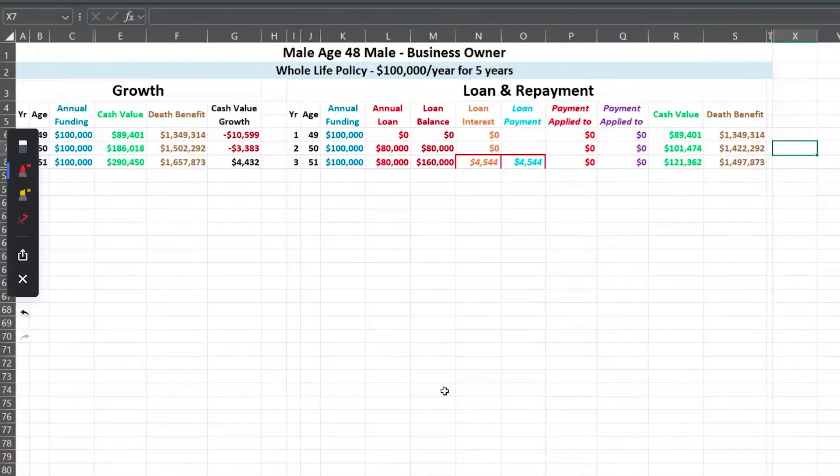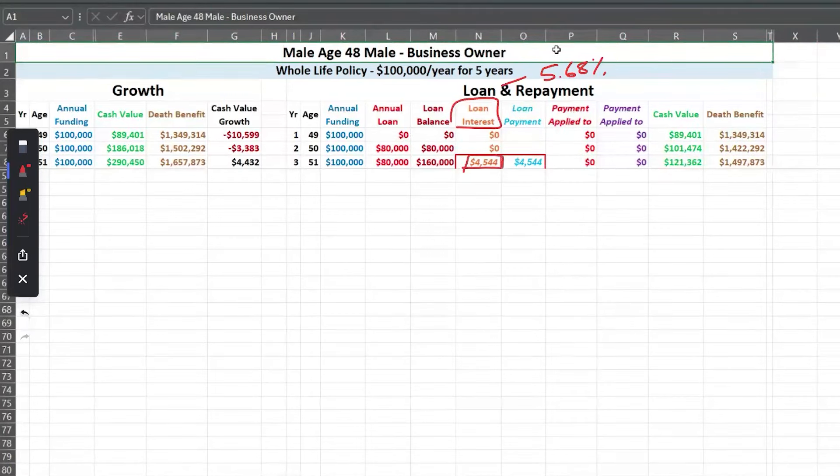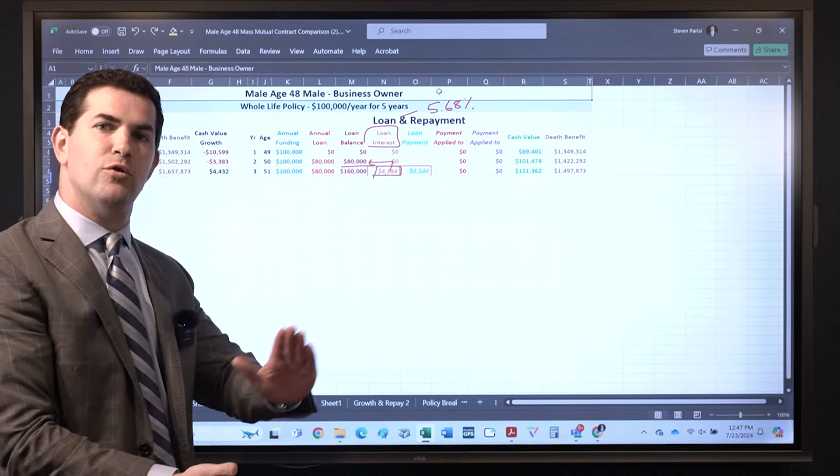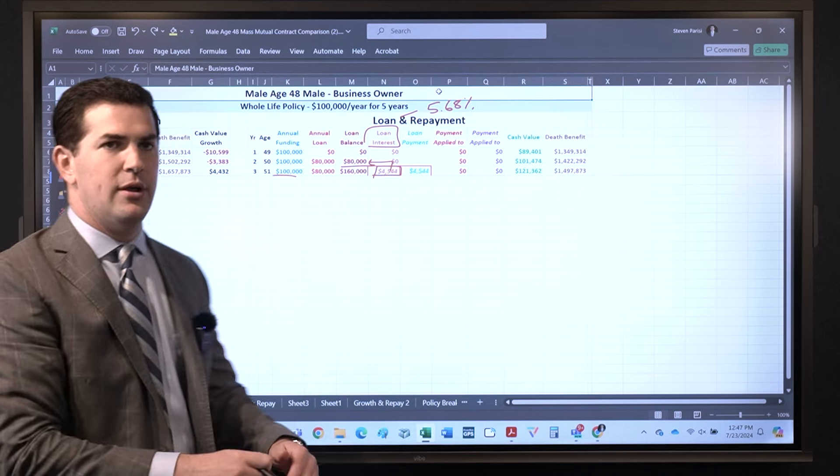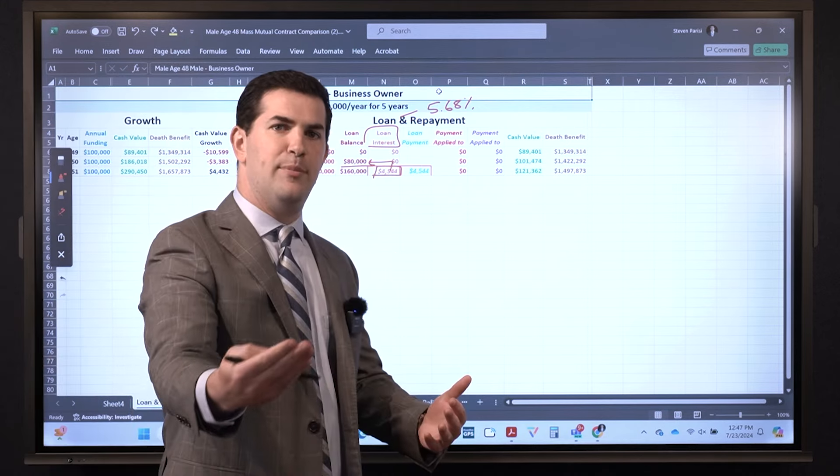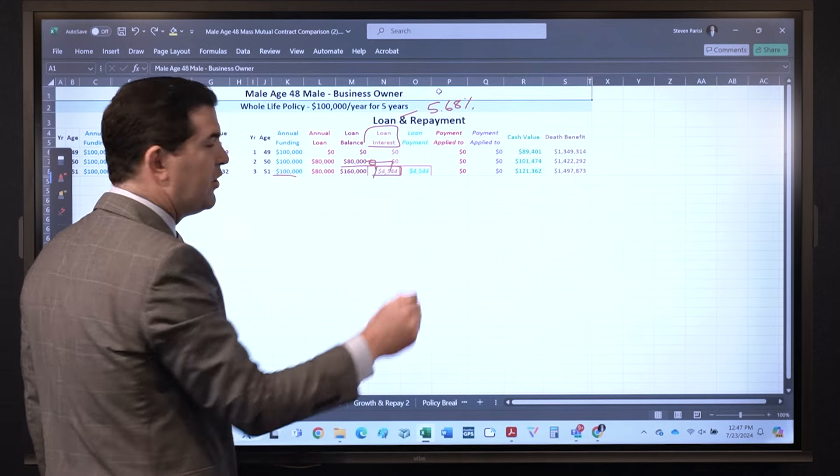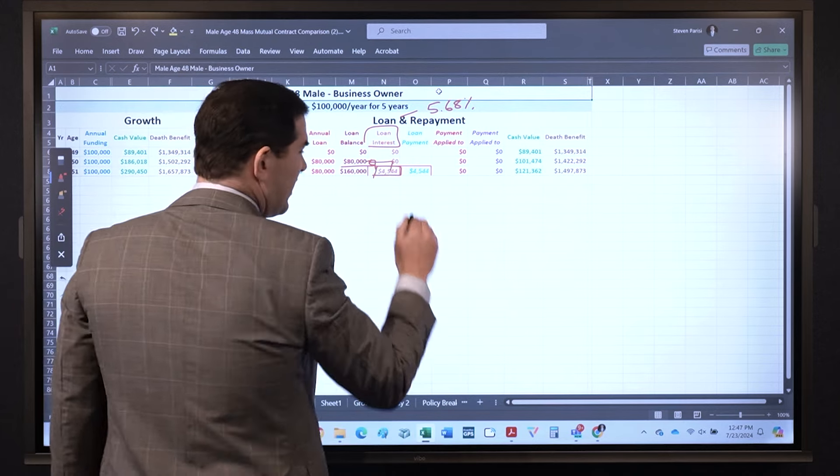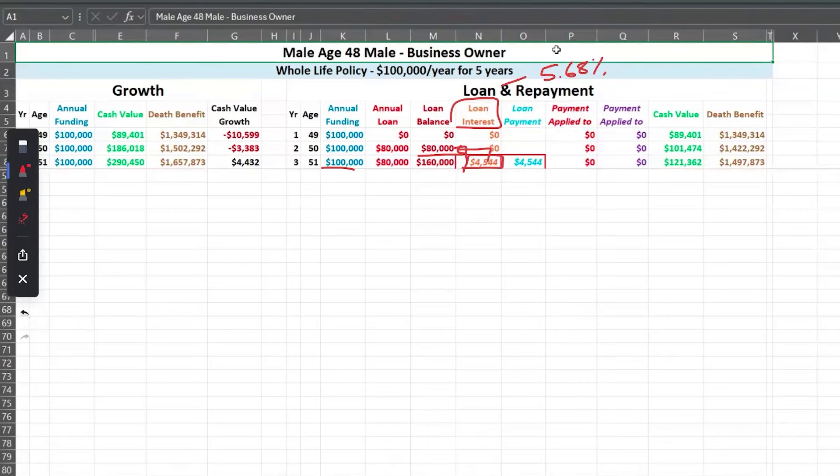So he's going to continue to take $80,000 loans. On the illustration we now see the loan interest come due. So the loan interest at 5.68%, this is on the loan balance for the prior year. So on our anniversary date, when the next year's premium comes due, the insurance company will send us a bill for the loan interest, which is why we see it the following year. We've got other videos that provide details on how loan interest works and such.